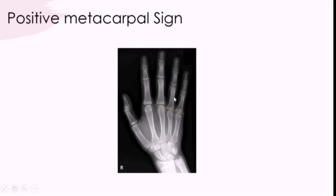A useful sign to look for is the positive metacarpal sign. You draw a line from the head of the fourth and fifth metacarpals and it should intersect with the head of the third. If shortening is present it can indicate injury. It can be positive in up to about nine percent of normal individuals, but it is most commonly seen in a variety of pathological conditions.